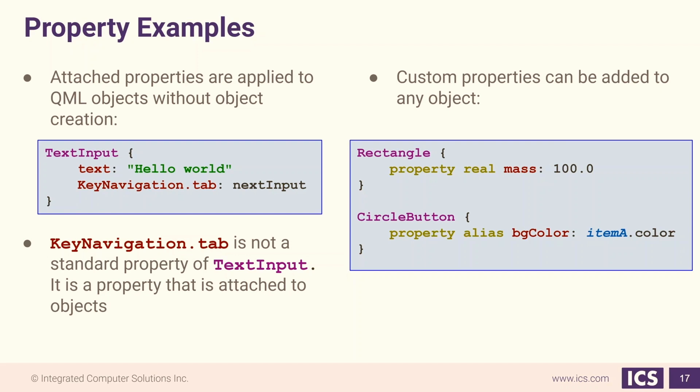We can also define custom properties for any QML object. If we look on the right side, we have a rectangle with a custom property of mass that is of type real. The syntax to create a custom property is: property, type, name, colon, bound or default value. After you create the property, it's now accessible like any standard property.